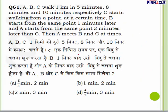Question number 61: A, B, C walk 1 km in 5 minutes, 8 minutes, and 10 minutes respectively. C starts first, B starts 1 minute later, and A starts 2 minutes after C. Speed of A = 200 m/min, speed of B = 125 m/min, speed of C = 100 m/min. This is a lengthier question but the kind that creates a difference towards getting a job.